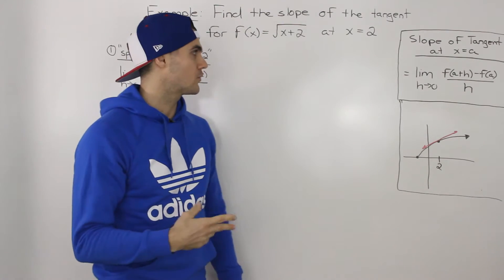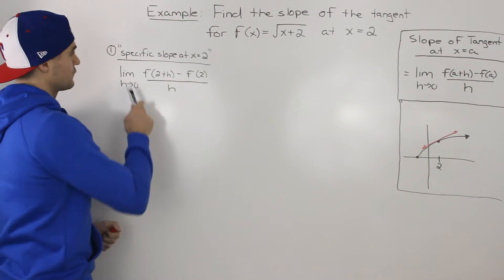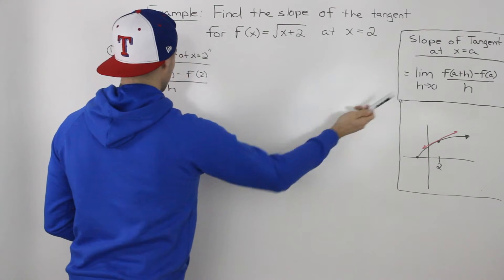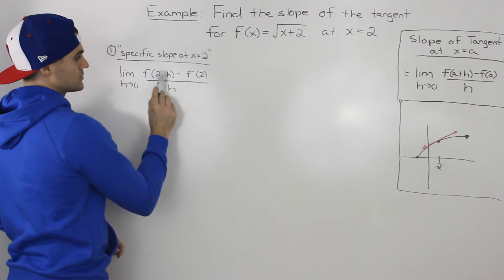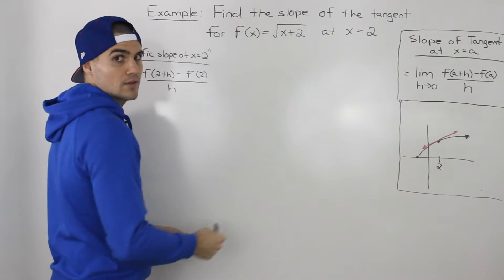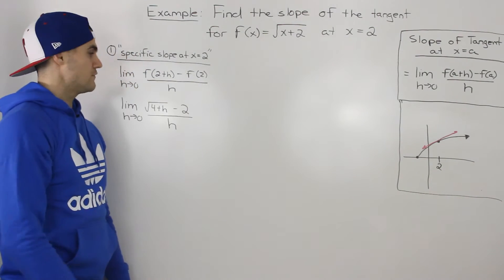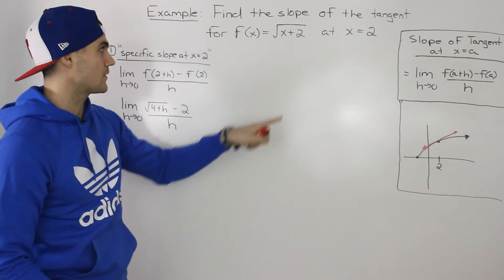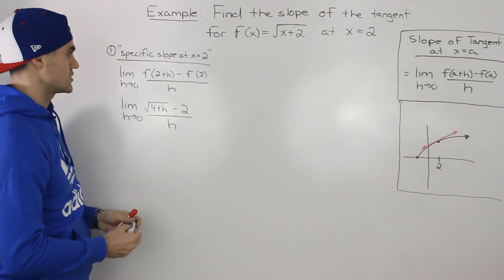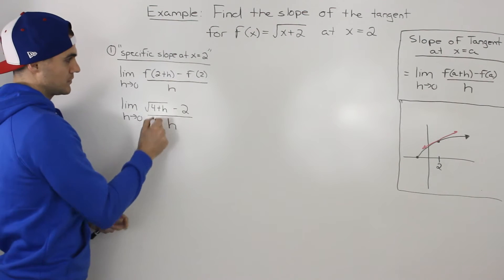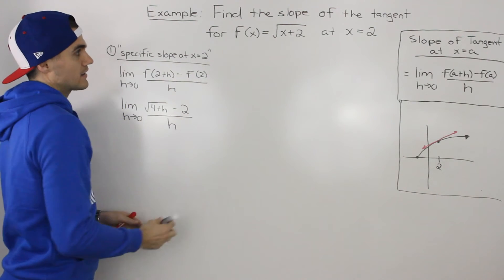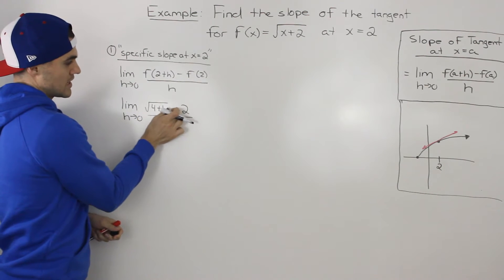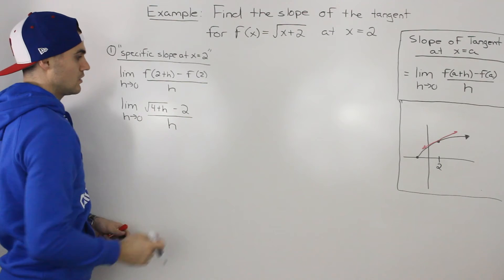Algebraically we're going to do it in two different ways. The first way is we're going to find the specific slope at the x value of 2. We use the slope of the tangent formula and plug in 2 for the a value. So f of 2 plus h — if we plug in 2 plus h for x we'll have the square root of 4 plus h. Then f of 2, plugging in 2 for x, gives us the square root of 4 which is just 2. So we have the square root of 4 plus h minus 2, all over h.